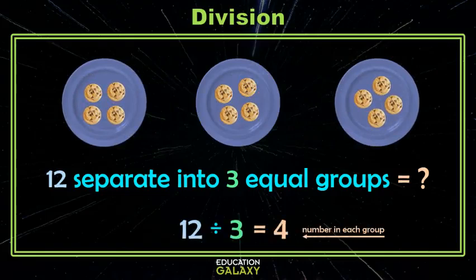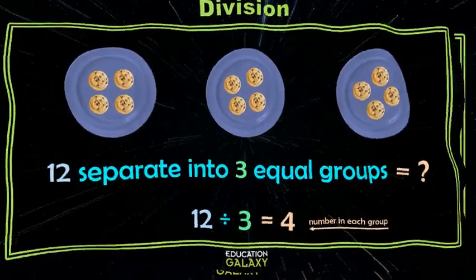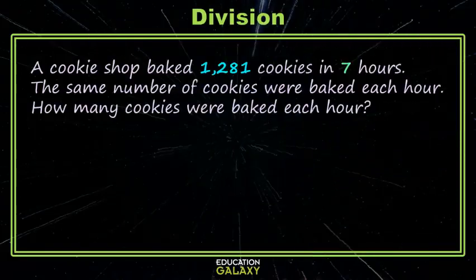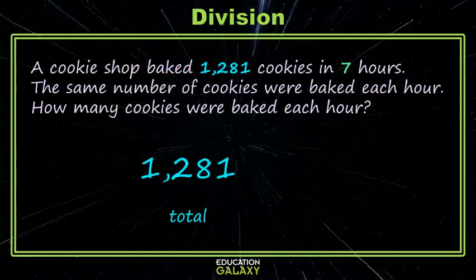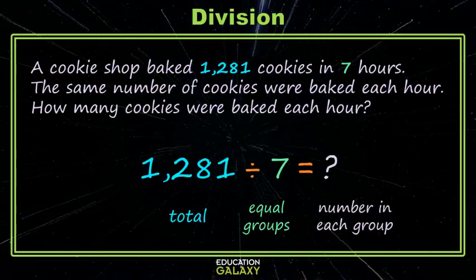So that's all we're doing today, it's just now we're going to use a lot more cookies. Today we're starting with 1,281 cookies and we baked them in seven hours. We want to know how many were baked each hour. So we're starting with a total, we're separating it into equal groups and we're looking for how many are in each group.